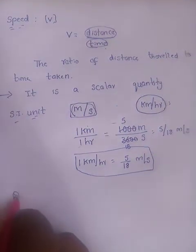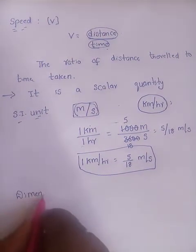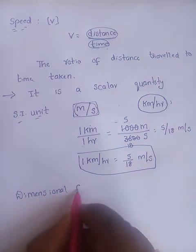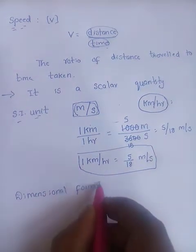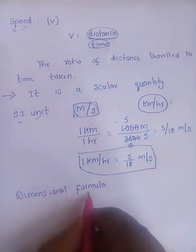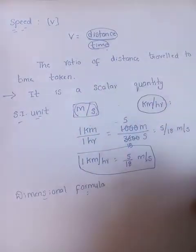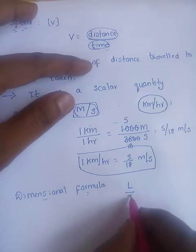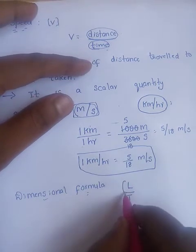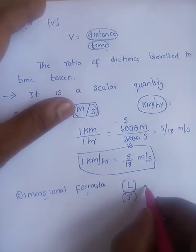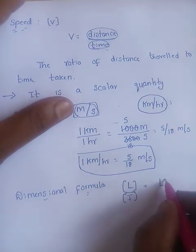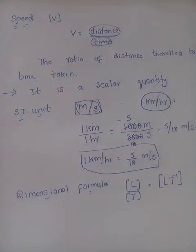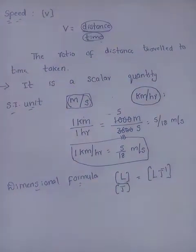What about the dimension formula? Distance is nothing but a measurement of length, so the dimensional formula for speed is L by T, which can be written as LT to the power minus 1. That is the dimension formula for speed.